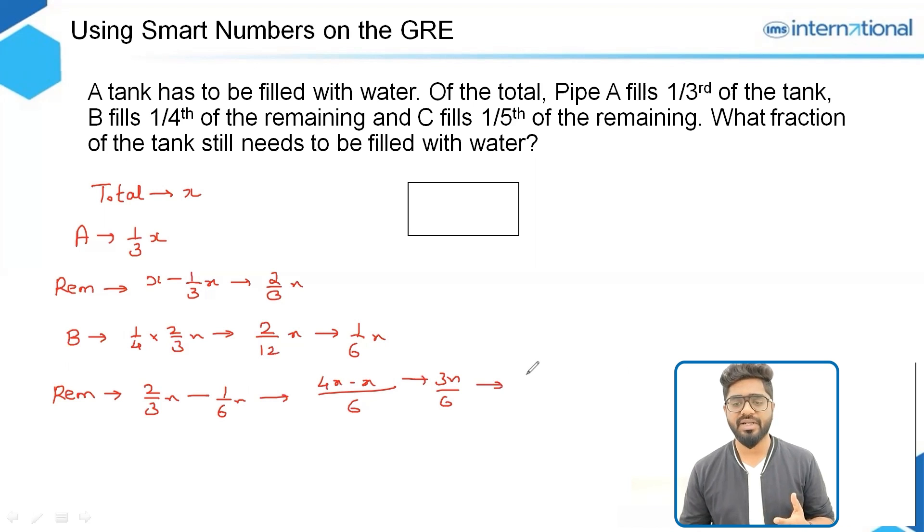Taking 6 as the LCM, we get 4x minus x over 6, which is 3x over 6. In its simplest form this can be written as x over 2. So half of the tank has already been filled now, and C fills one fifth of half of it, which equals x over 10.